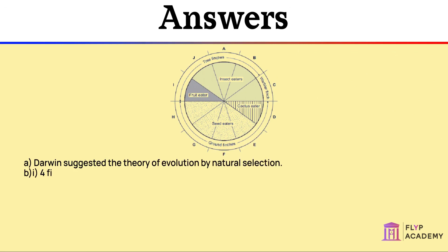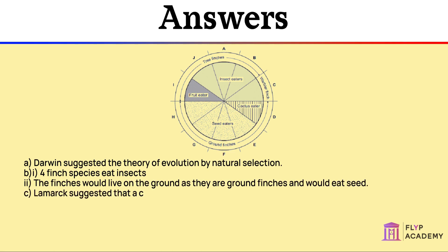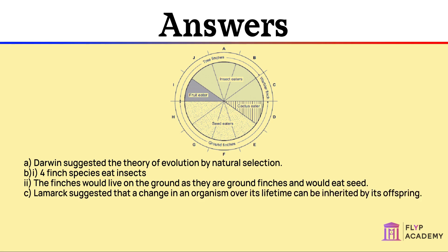B, question 1: Four finch species eat insects. Question 2: The finches would live on the ground as they are ground finches, and would eat seed. C: Lamarck suggested that a change in an organism over its lifetime can be inherited by its offspring.